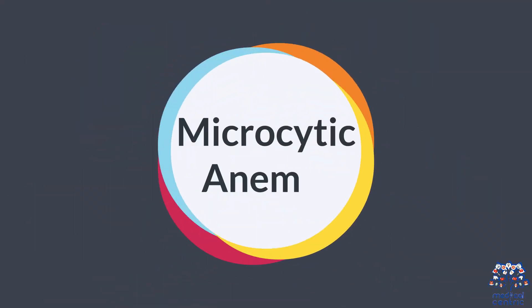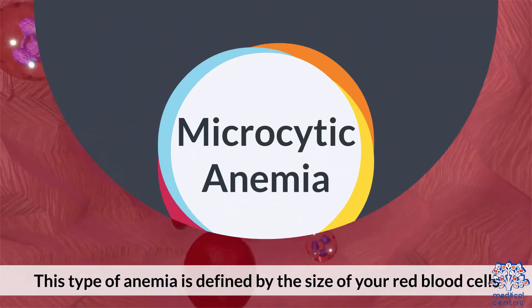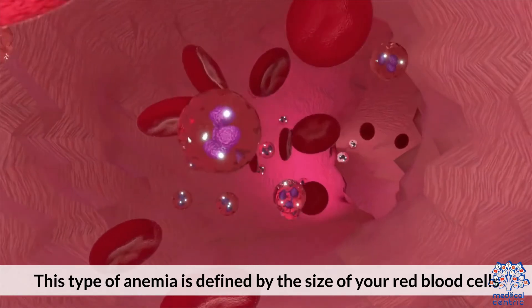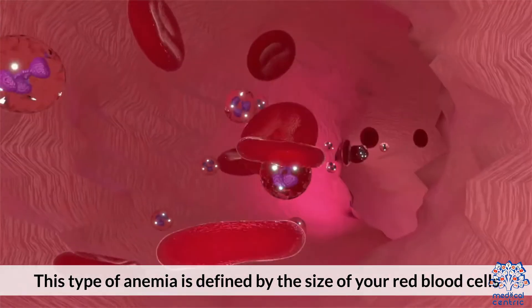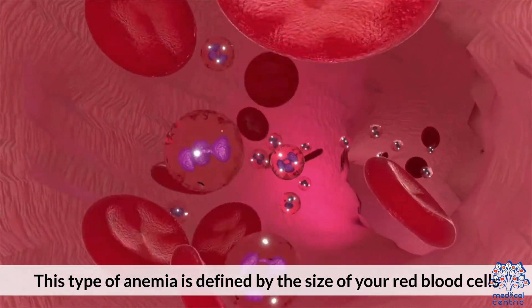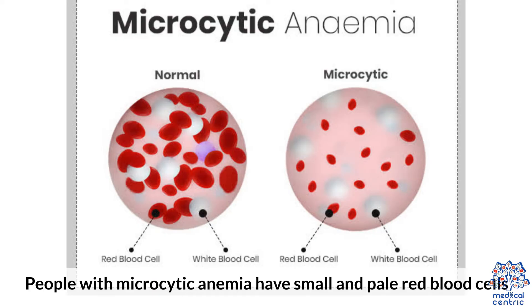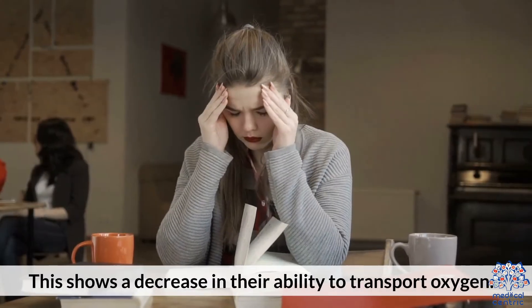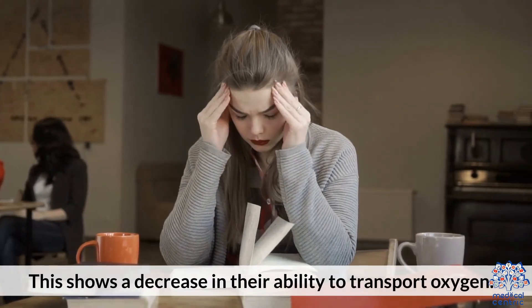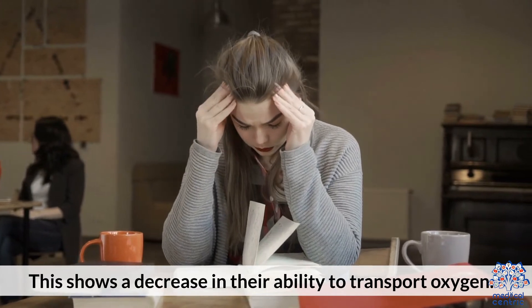Type 2: Microcytic Anemia. This type of anemia is defined by the size of your red blood cells. People with microcytic anemia have small and pale red blood cells, which shows a decrease in their ability to transport oxygen.